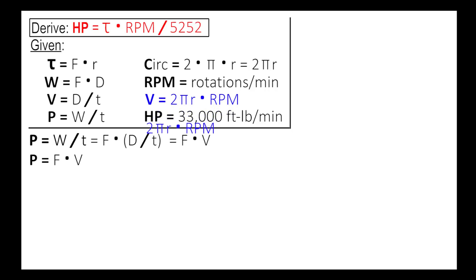So let's work with the velocity first. And from above, we have velocity equals 2 pi r times RPM. So we'll go ahead and substitute that in. Next, we need a force. Now remember that torque is force times radius. So that means that the force equals the torque divided by the radius.